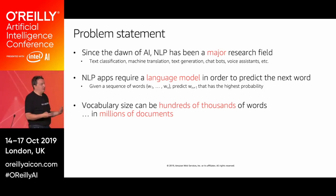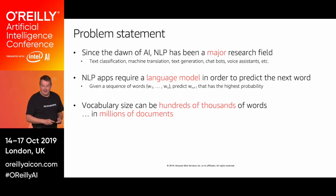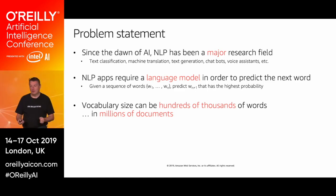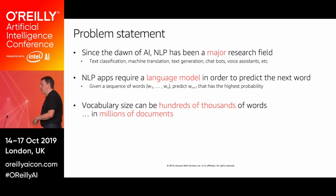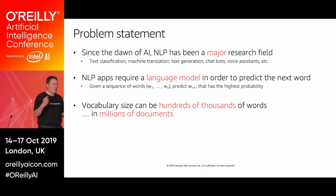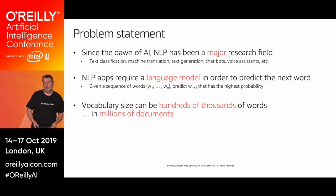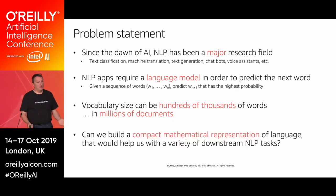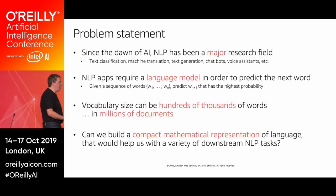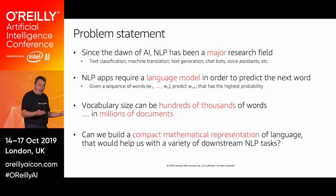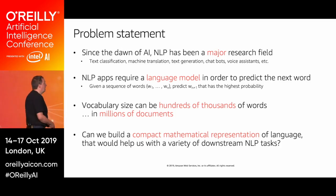We should be able to understand context in millions of documents — we're talking big corpora here, billions of words, maybe tens or hundreds of billions. Think Wikipedia, lots and lots of data. So can we build a compact mathematical representation of language that will help us with all those downstream tasks like sentiment analysis and classification?